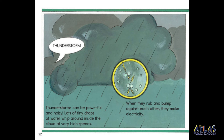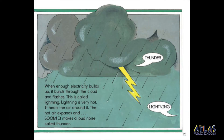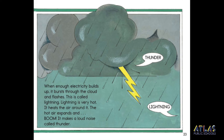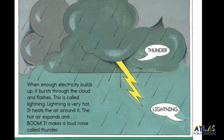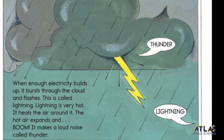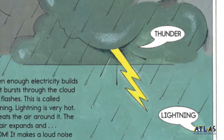Thunderstorms can be powerful and noisy. Lots of tiny drops of water whip around inside the cloud at very high speeds. When they rub and bump against each other, they make electricity. When enough electricity builds up, it bursts through the cloud and flashes. This is called lightning. Lightning is very hot. It heats the air around it. The hot air expands and boom! It makes a loud noise called thunder.